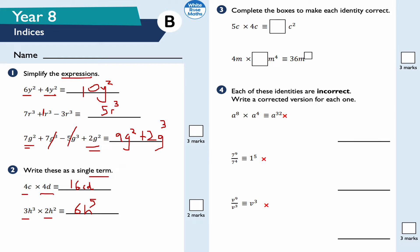Question number three: complete the boxes to make each identity correct. 5c times 4c is equivalent to — 5 times 4 is 20, and c times c is c squared. You can think of it as c to the power of 1 times c to the power of 1; adding the powers gives 1 plus 1 equals 2. So 5c times 4c equals 20c squared.